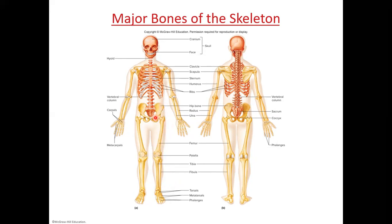On the back is your scapula, your shoulder blade, and the clavicle — your collarbone — actually extends from front to back. In the vertebral column, you have your vertebrae, and at the base we have some fused vertebrae: your sacrum and then your coccyx, which is also commonly called your tailbone. Your sternum is in the middle and the ribs are off to the sides.